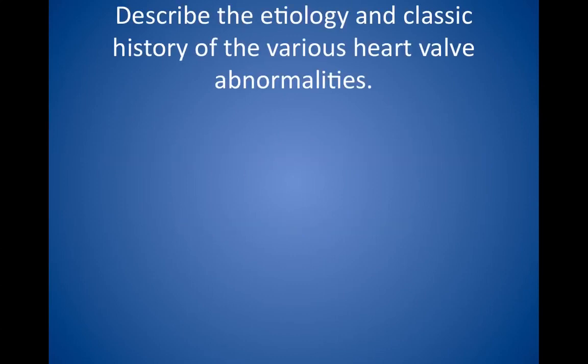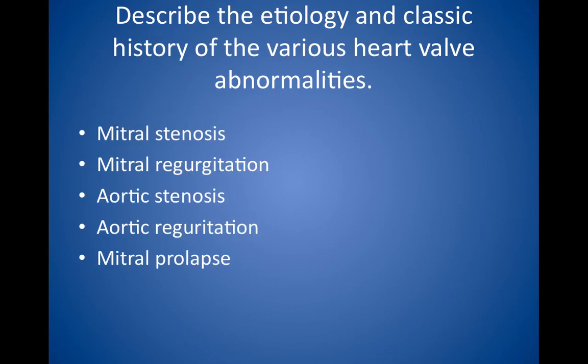First question: describe the etiology and classic history of the various heart valve abnormalities. Mitral stenosis presents as a late diastolic blowing murmur best heard at the apex. Other findings include an opening snap, a loud S1, atrial fibrillation, left atrial enlargement, and pulmonary hypertension.